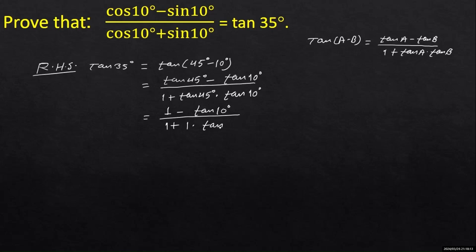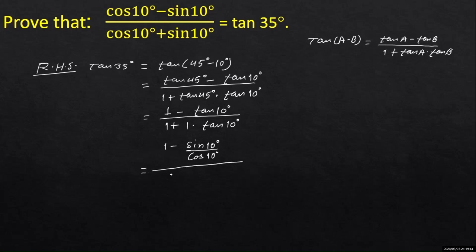We have started from RHS and we have to find LHS. But LHS is in terms of sine and cos. So this will also be changed into sine and cos. 1 minus tan(10°) — where tan(10°) equals sine(10°) upon cos(10°) — and in the denominator, 1 plus tan(10°), again writing sine(10°) upon cos(10°).